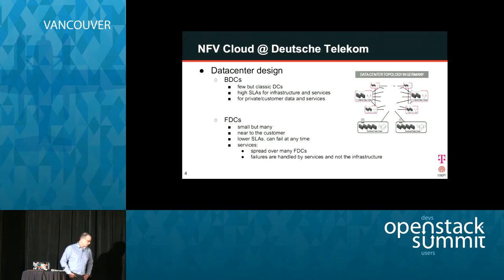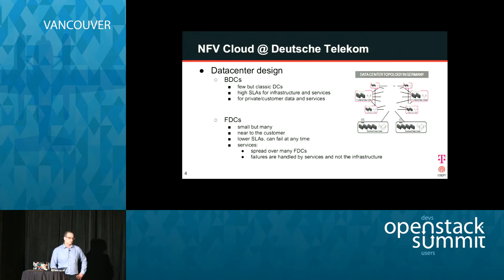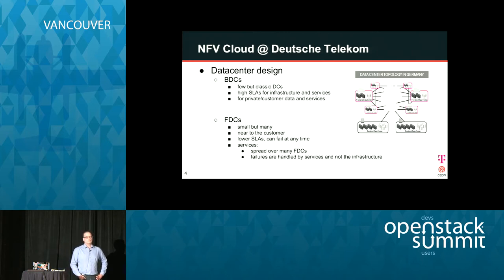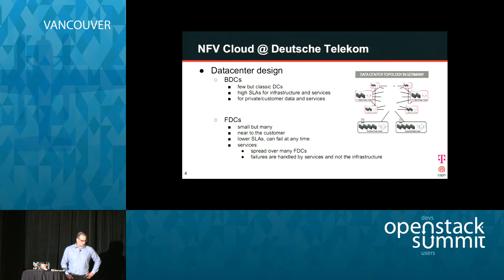What we're trying at Deutsche Telekom is building an NFV cloud for our telco core. We have a data center design with two types of data centers. One is a BDC — a back-end data center. There are only a few in Germany, and these are more classic data centers. We have high SLAs for the infrastructure and services, including fire departments and all the usual stuff, and we serve services that are very critical, containing private and customer data, therefore requiring those high SLA requirements.